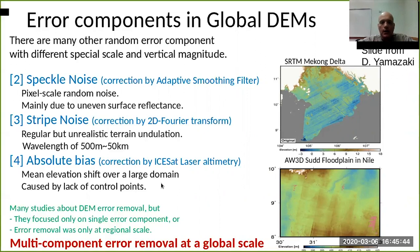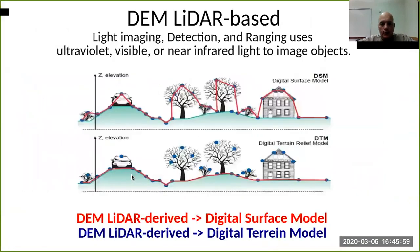They can be corrected based on different kinds of approaches, for example Fourier transformation or using ancillary data for correcting the bias of these errors.